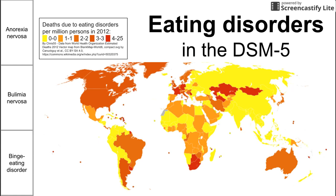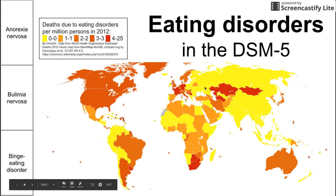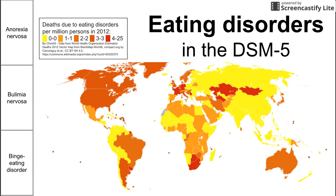Before we begin, we have a bit of epidemiology. We have a world map showing the deaths due to eating disorders per million in 2012. You can see the prevalence across the world, and it seems like Western countries like the United States, Western Europe, Australia, and Brazil have higher rates of eating disorders that lead to death.